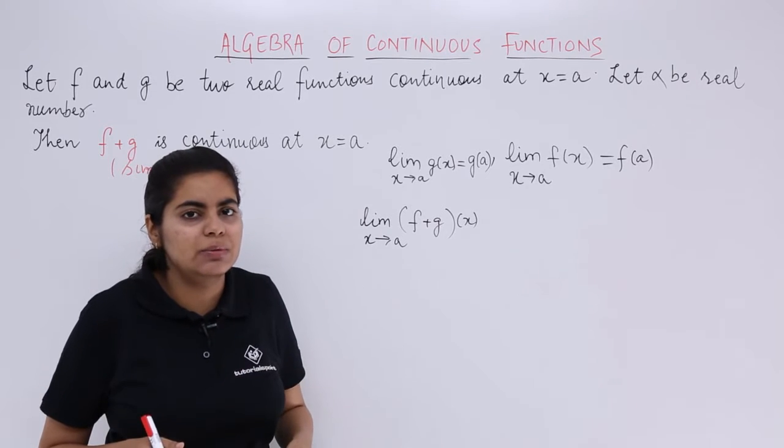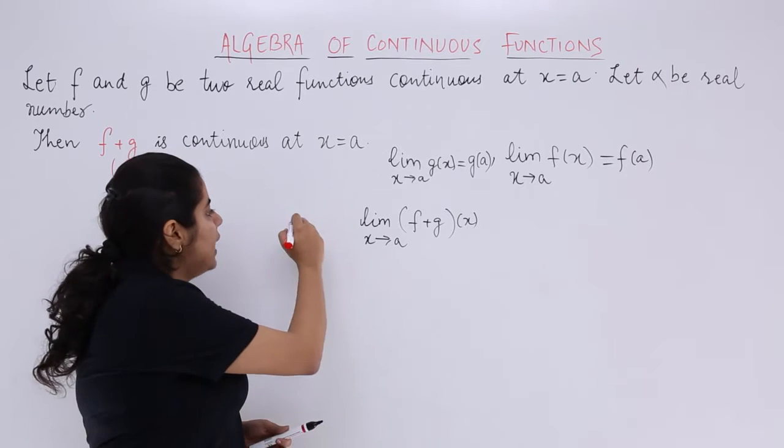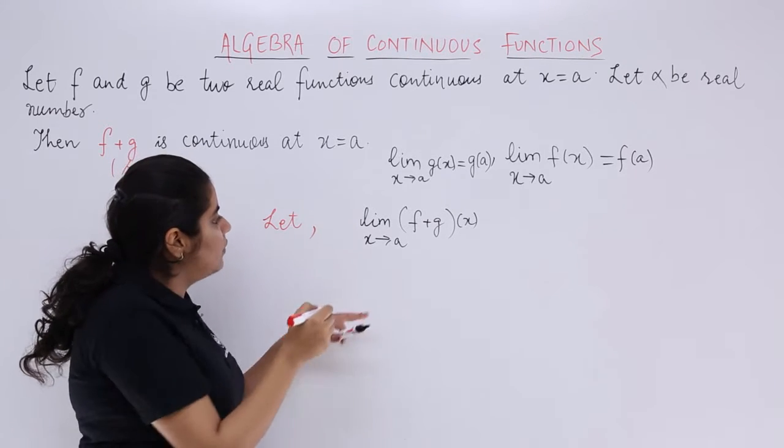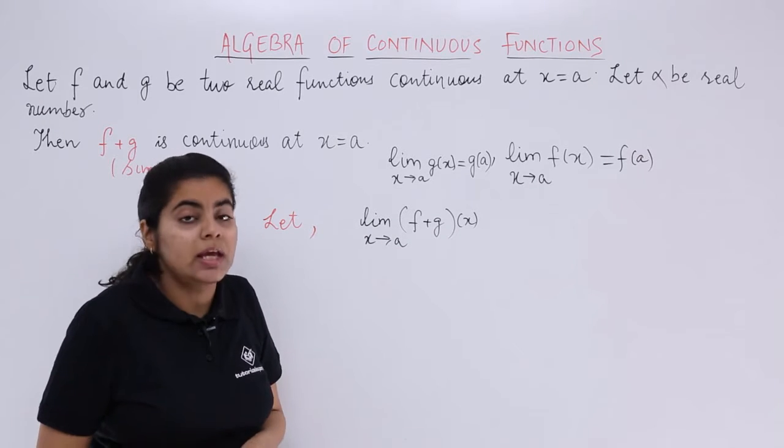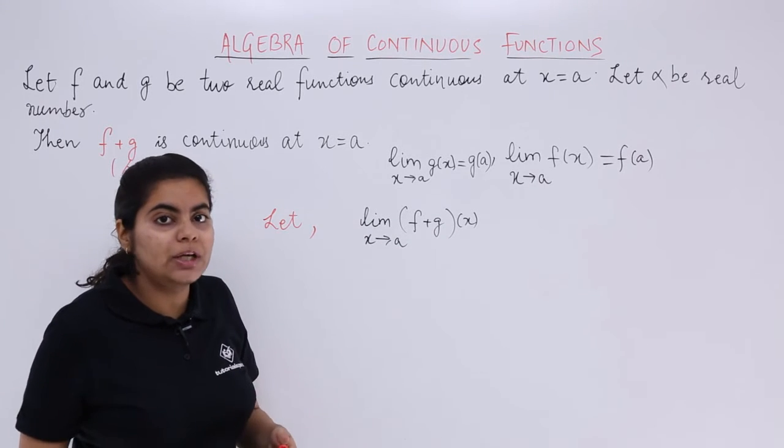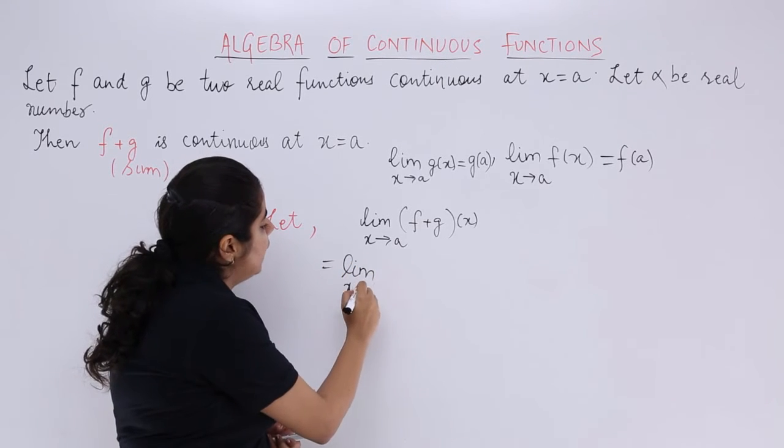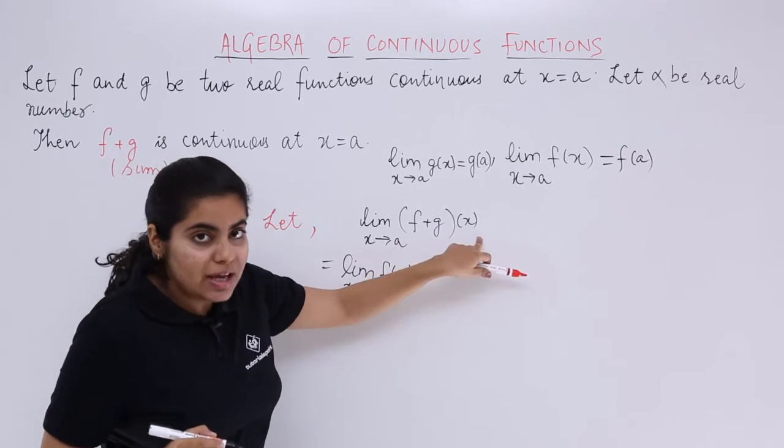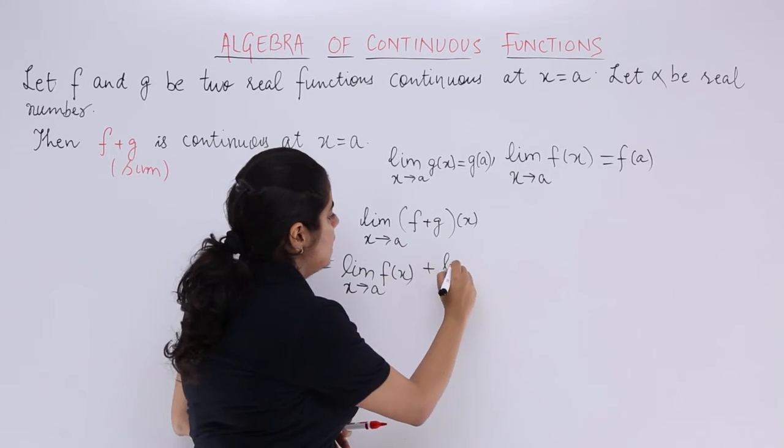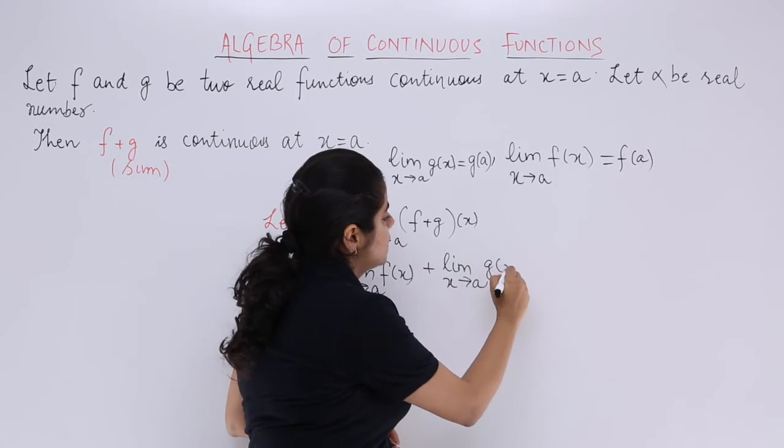Now, if f plus g is continuous, to check that, to prove that, to verify that, let we have limit f plus gx at x tends to a. You know the property of limits from our previous classes that we can always separate it. So it becomes limit fx plus limit gx at x tends to a.